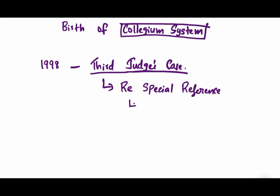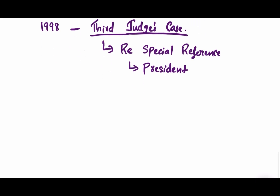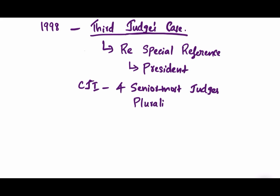This gave rise to the Third Judges' Case. The ruling by the Supreme Court was that the collegium system must be a five-member body, comprising the Chief Justice of India and four other senior-most judges.